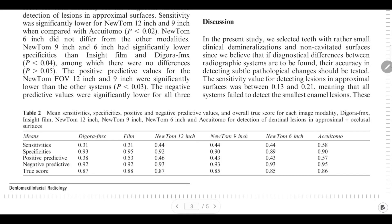For detection of dentinal lesions in proximal and occlusal surfaces, sensitivity was 0.31 for both intraoral films, while on CBCT it was higher — reaching 0.58 with the Morita system. Specificity was highest for intraoral radiographic films and decreased with field of view size, with Morita recording 0.9.